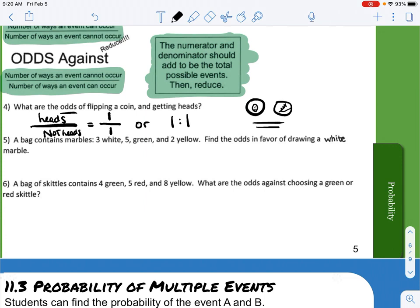And then number five. A bag contains marbles: three white, five green, and two yellow. Find the odds in favor of drawing a white marble. So we want odds for drawing a white. We have white is equal to three. The not white are the green plus the yellow, which is seven. So this is the not white. So we end up getting a three to seven odds, or you can write it 3:7.